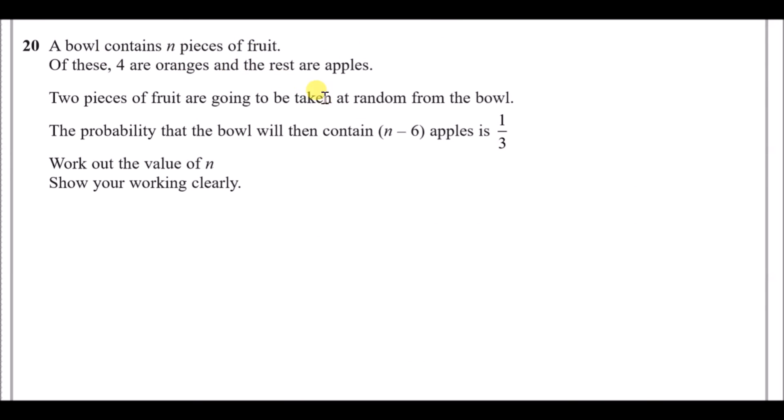So a bowl contains n pieces of fruit. Of these, 4 are oranges and the rest are apples. So visually, to understand this, we've got a bowl here and we've got 4 oranges. And we know that the difference between n and 4 are the remaining apples. So it would be n minus 4 apples. Now, two pieces of fruit are going to be taken at random. The probability that the bowl would then contain n minus 6 apples. So if you're going to get from n minus 4 to n minus 6, you would have taken two apples in a row. And the probability of doing that gives you a third.